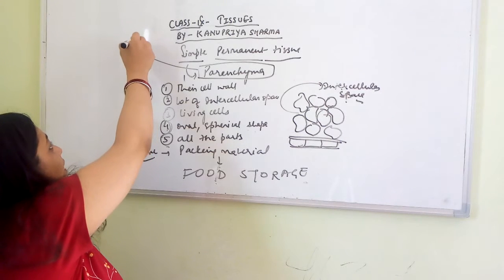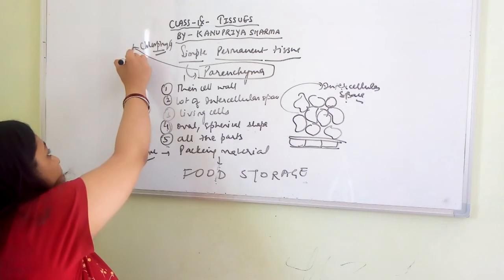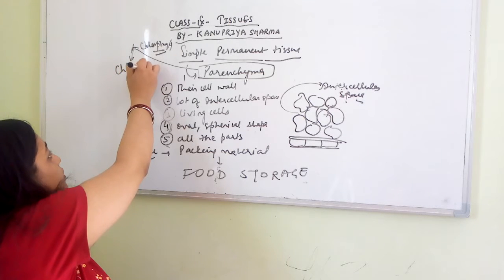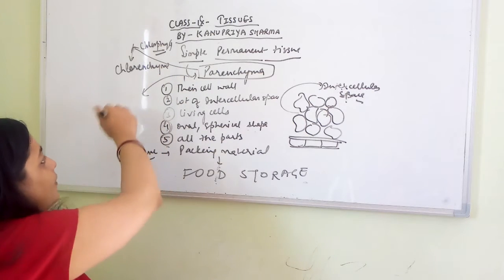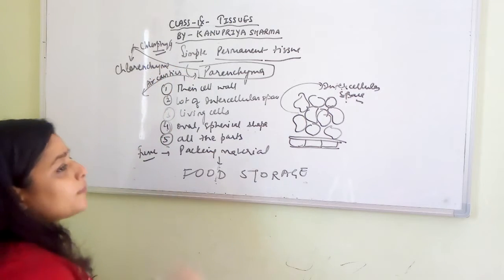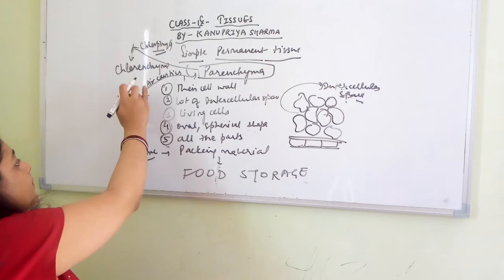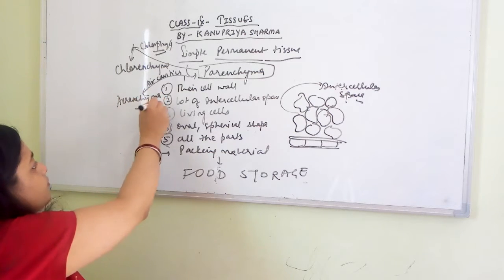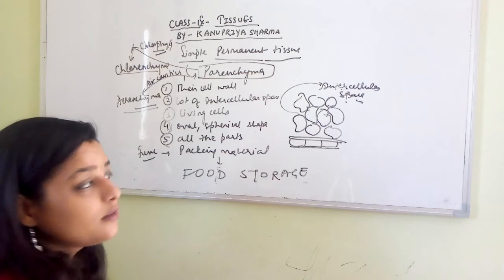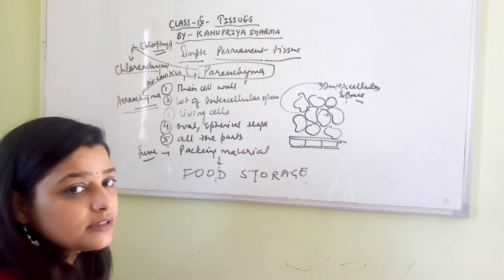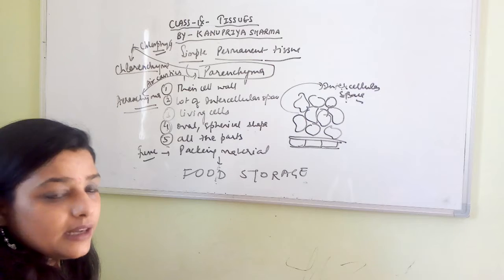Parenchyma cells are mostly oval or spherical shaped and are found in almost all parts of the plant body. Their main function is as packing material and they play a major role in food storage. Some parenchyma cells have chlorophyll and are known as chlorenchyma; others in aquatic plants have air cavities to give buoyancy and are known as aerenchyma.